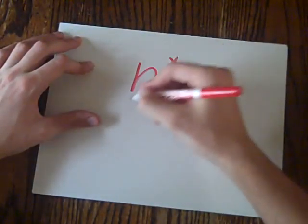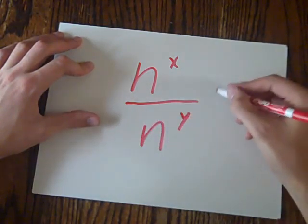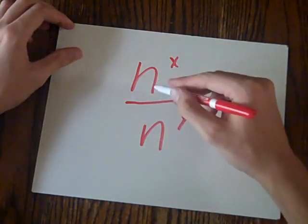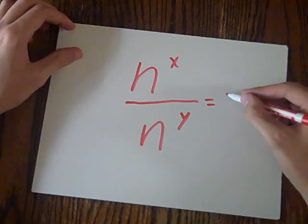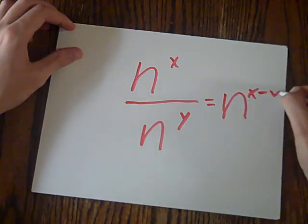We got n to the power of x over n to the power of y. So we have to divide this one by this one. The rule is we get n to the power of x minus y.